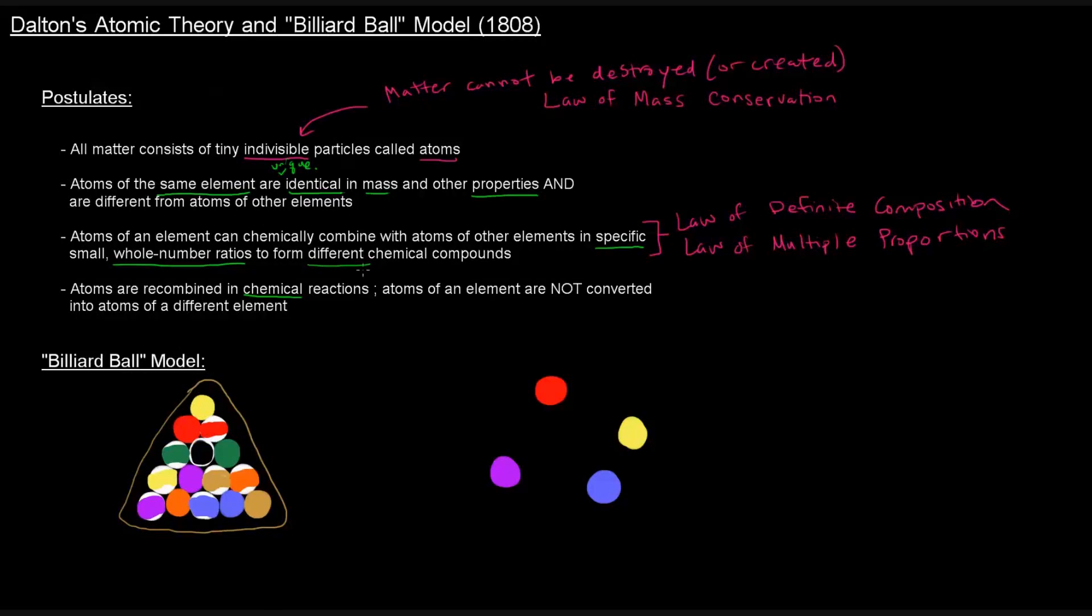He thought that atoms were kind of like billiard balls. When you see a billiard ball, it's contained basically all of one material. It's like that really, really hard plastic that resists cracking. He thought that atoms were kind of like that. He thought they were just like all one material. And from element to element, the atoms differed.